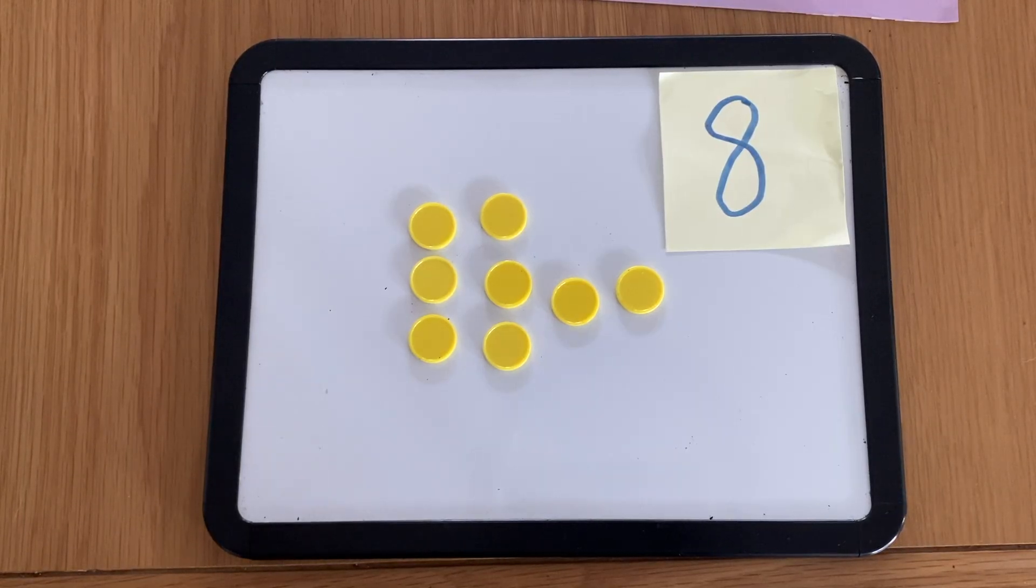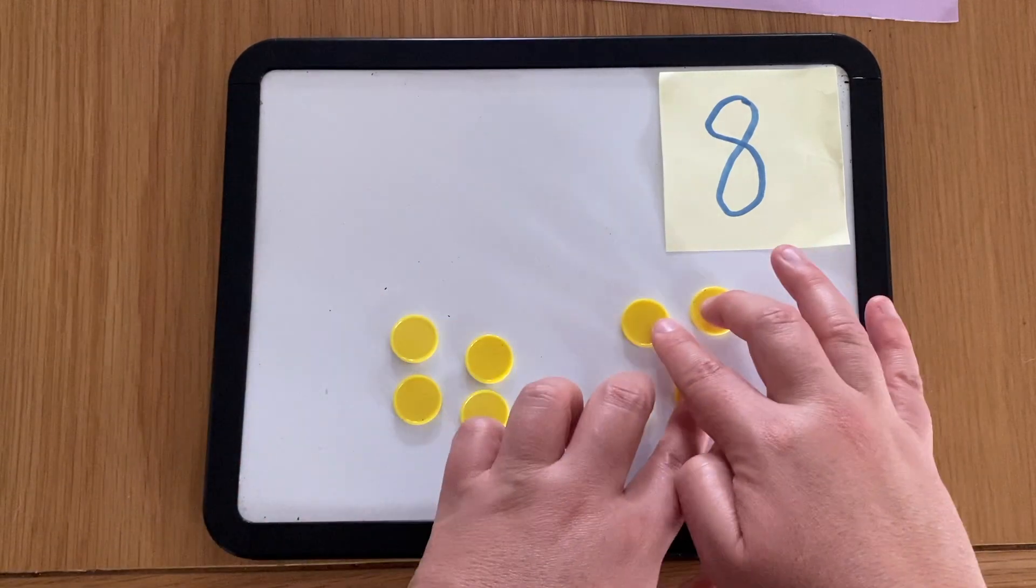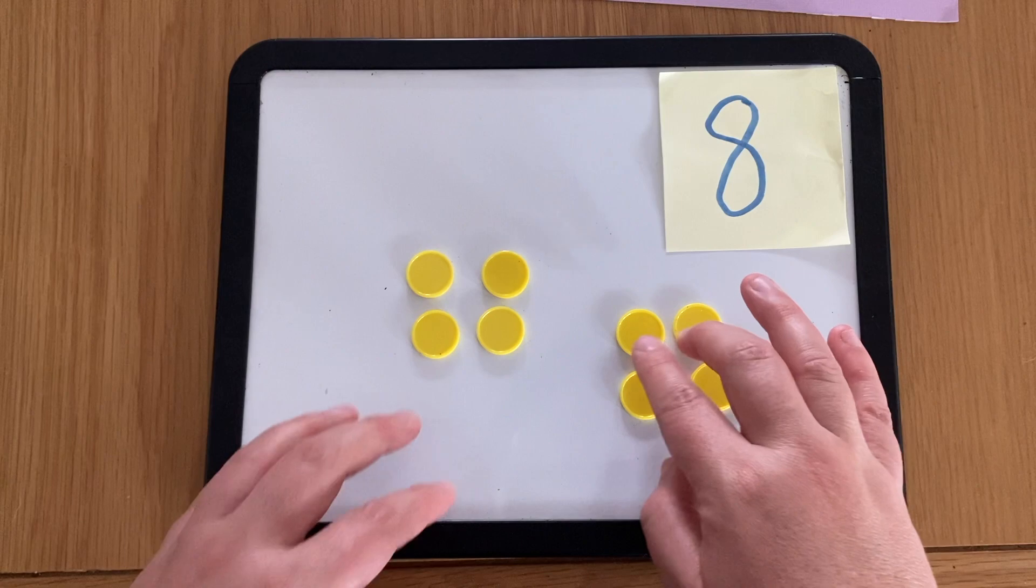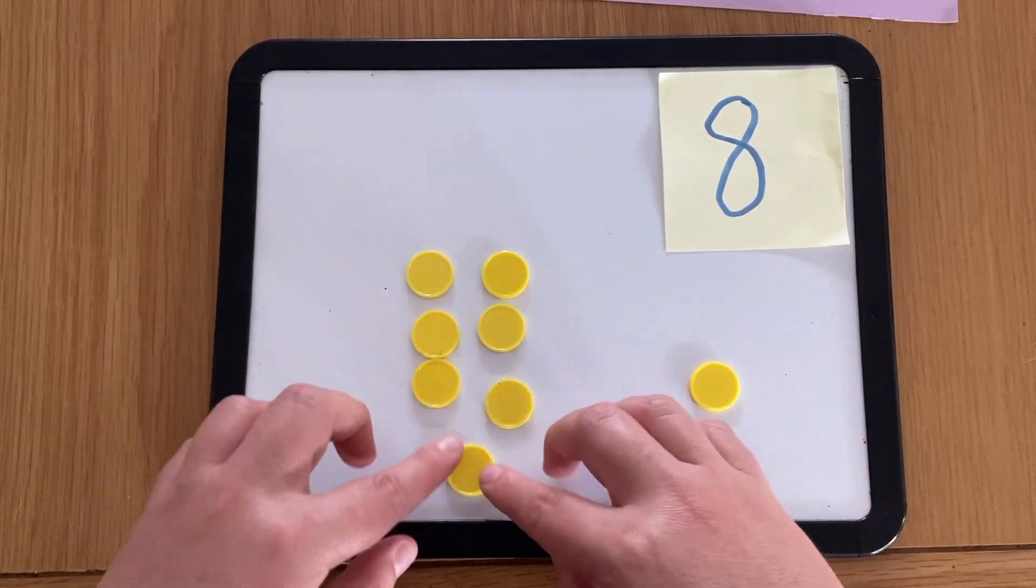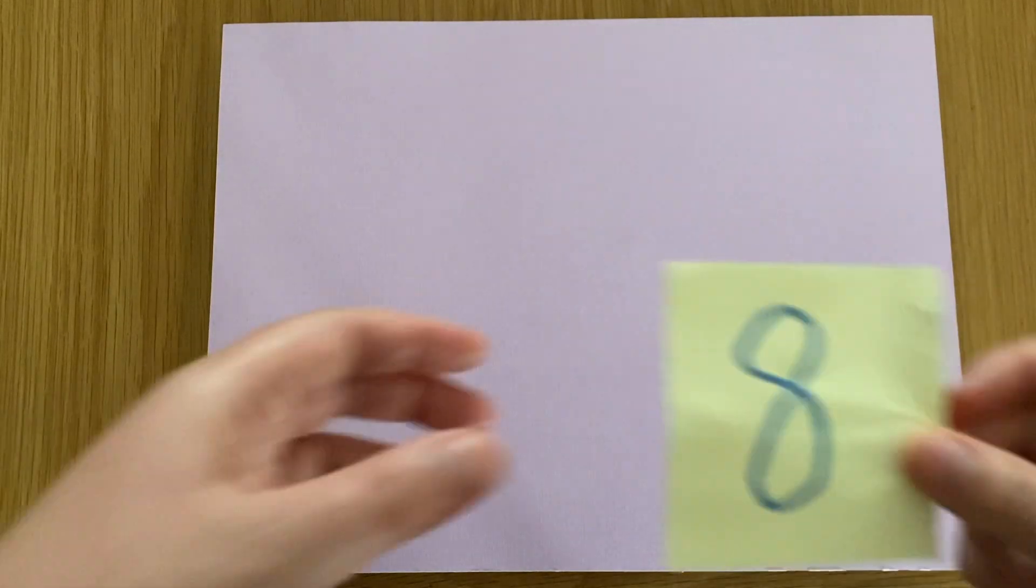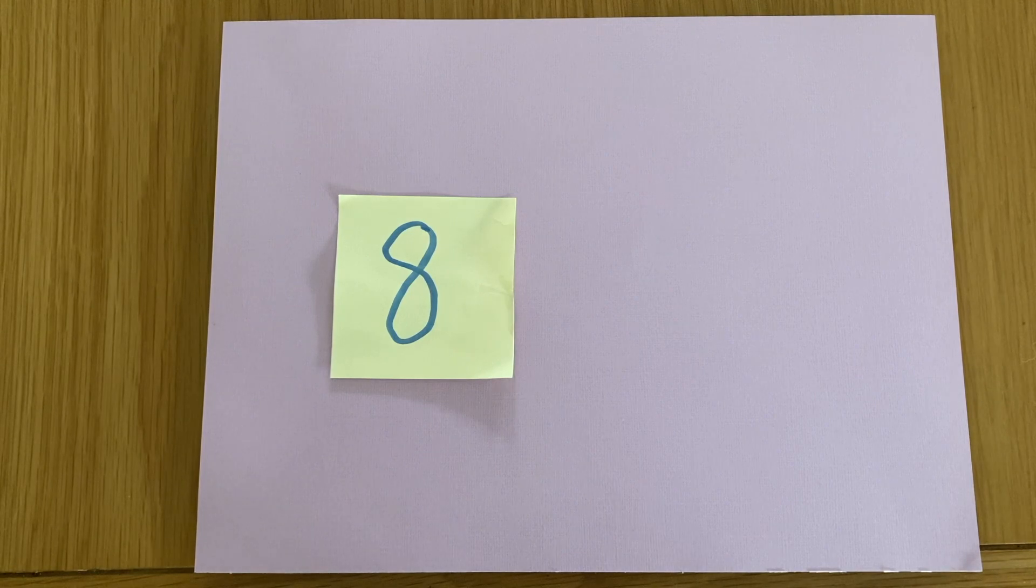So from here we can now start to explore the number eight and develop our number sense around what this can look like in standard and non-standard partitioning. I might ask the students to go away with eight counters and show me all of the different ways that eight can look. They might draw this in their book, they might take photos of it, but we'll just spend some time playing around with the number eight and the different ways that that can look. So then once we have played around with the number eight, I will then use this numeral to explore addition, subtraction, and finding the difference.